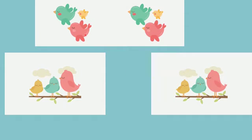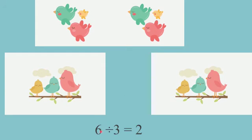Here you can see birds. Let's count how many birds there are: one, two, three, four, five, six. So there are six birds altogether. Now we are going to divide these six birds into two groups. You can see there is one group of three birds and another group of three birds. So I can say that six divided by three equals two, because in each group there are three birds and there are two groups altogether.